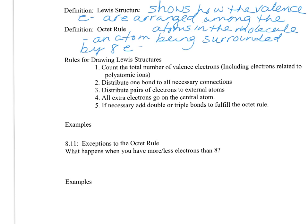Some basic rules: count the total number of valence electrons, including electrons related to polyatomic ions, then distribute one bond to all necessary connections. Distribute your pairs of electrons, and if you have any extra electrons, they go on the central atom. If you need to add double bonds or triple bonds to fulfill an octet, do so. You know that atoms can't have more than 8, and everything really wants 8 — except for hydrogen and helium.